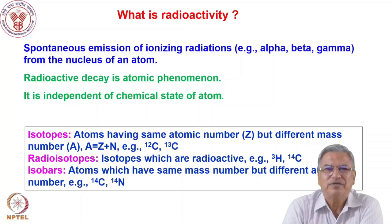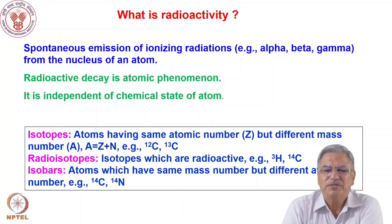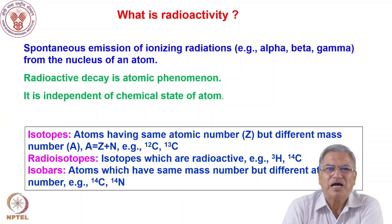Before we go to the next part and other aspects of radioactivity, I thought it good to introduce some of the nomenclatures we will be discussing in these lectures. We have isotopes. Isotopes are atoms of an element having the same atomic number, which we will call Z, but different mass numbers. Mass number is denoted by capital A, atomic number by capital Z. Mass number is nothing but the sum of the proton number and neutron number of the nucleus. For example, carbon-12 and carbon-13 are the two isotopes of carbon.